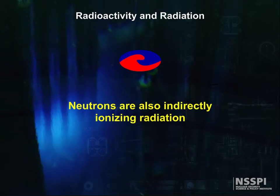Finally, neutrons are also indirectly ionizing radiation. They are neutral. They don't interact with the electrons at all. Their only interactions are when they splat into the nucleus.